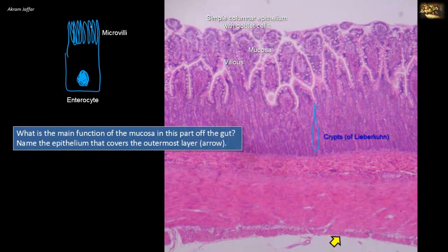Outside the mucosa is the submucosa, consisting of loose collagenous connective tissue. The absence of Brunner's glands in the submucosa excludes the duodenum, so this could be jejunum or ileum. The absence of abundant lymphoid follicles in the submucosa — a feature of the ileum — favors that this is the jejunum. Outer to the submucosa is the muscularis propria, also called the muscularis externa. The outermost layer is a thin adventitia of loose connective tissue with large blood vessels and nerves. Where the surface is covered by peritoneum, the adventitia is referred to as the serosa.